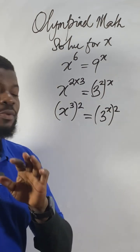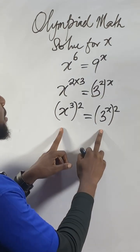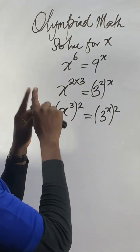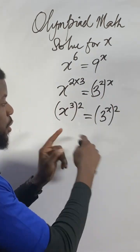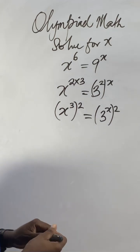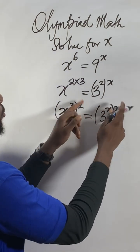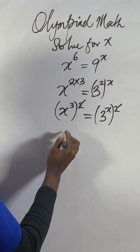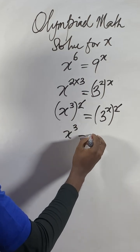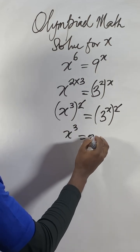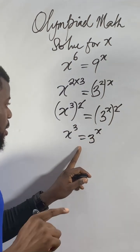Now anytime we get to this point, you always get: when the base is the same, equate the power. Anytime the power is the same, equate the base. Now as I see this, the powers — two and two — are the same, so I will equate the base: x to the power of three equal to three to the power of x.